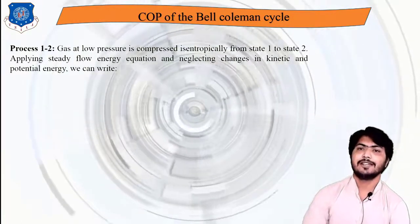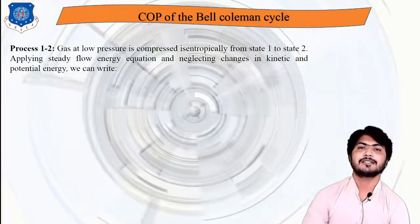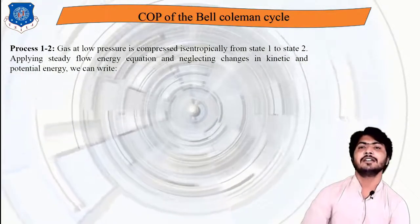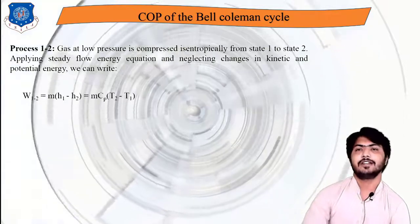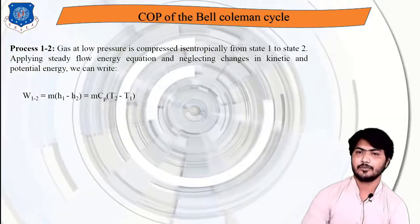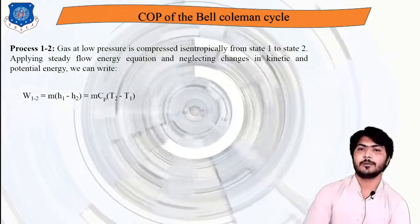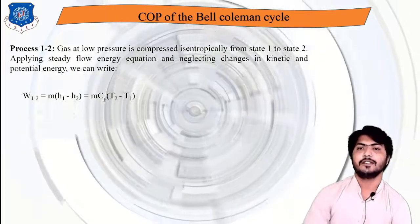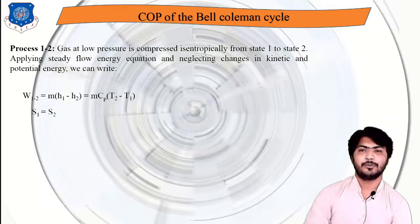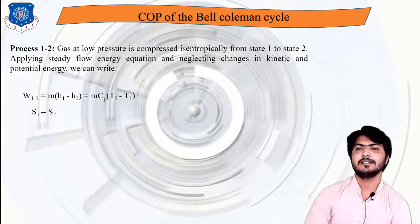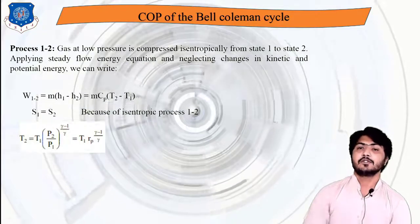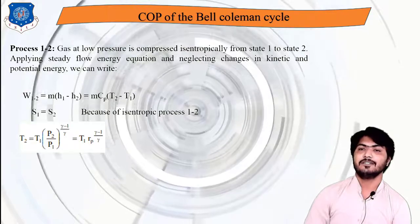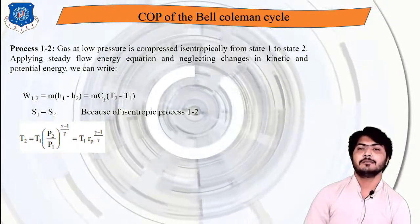In process 1 to 2, gas or air at low pressure is compressed isentropically from state 1 to 2. Applying the Steady Flow Energy Equation and neglecting kinetic and potential energy: W12 = m(H1 − H2) = mCp(T2 − T1). For the isentropic process, we use the relation: T2/T1 = (P2/P1)^((γ−1)/γ), derived from PV^γ = constant.